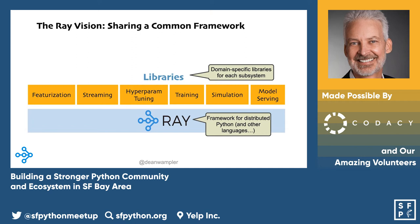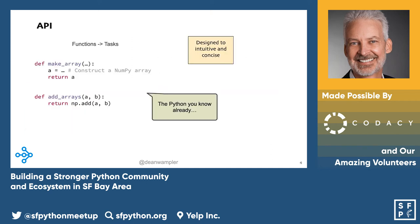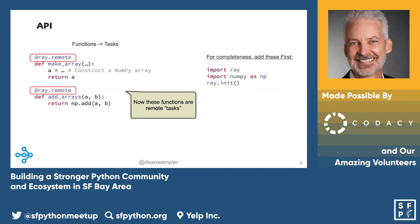There's a core framework called Ray and then libraries for high-level functionalities built on top of it. We wanted Ray to be as intuitive and concise as possible, making things as familiar as possible. If you take two standard Python functions and annotate them with the ray.remote annotation, that turns them into what we call tasks. These will be distributed around your cluster or across the cores on your laptop, so you can get maximal compute leverage.